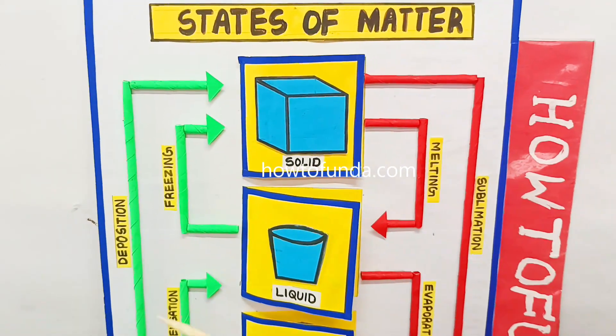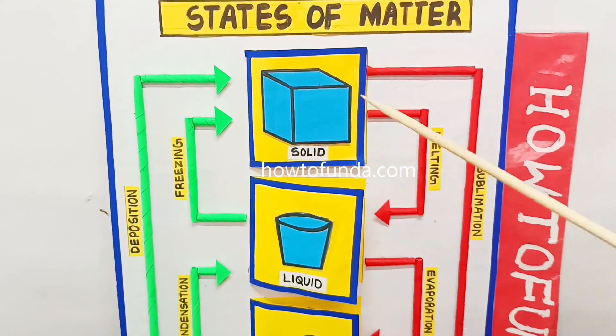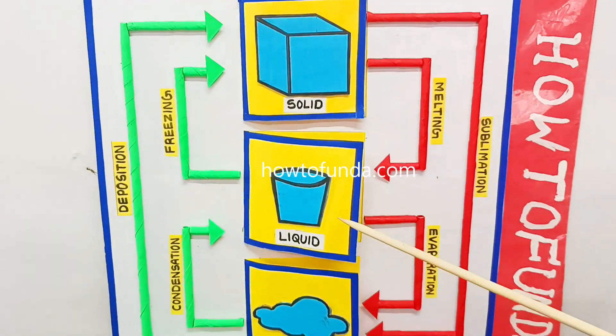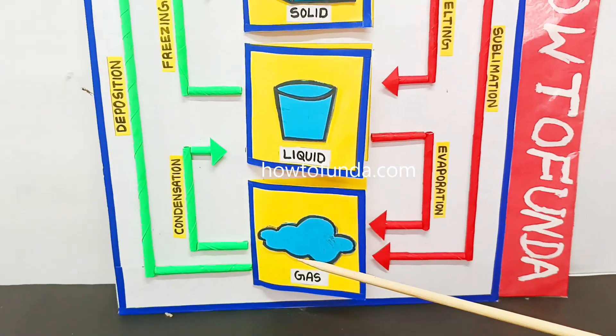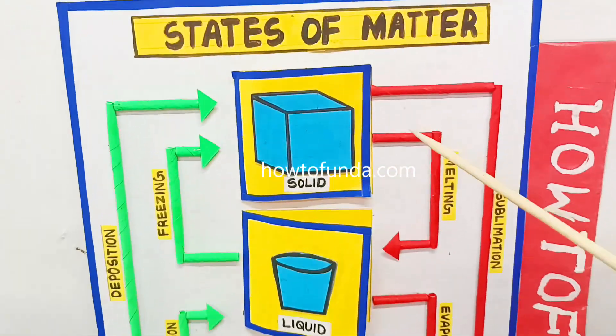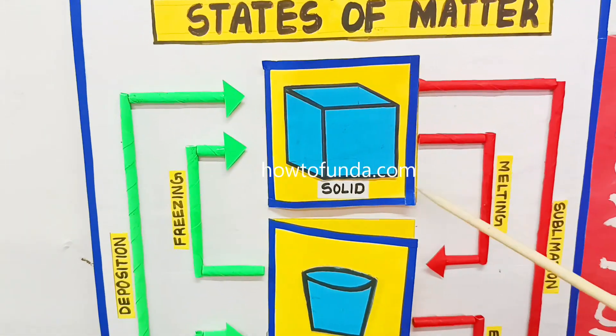Matter has three types of states. One is solid state, another one is liquid state, and the third one is gas state. Now we will try to understand what is all about solid state.